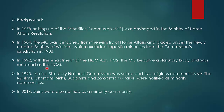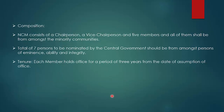In 1993, the first statutory National Commission for Minorities was set up and five religious communities — Muslim, Christians, Sikhs, Buddhist and Zoroastrians (Parsis) — were notified as minority communities. Now we have six minorities in India: Christians, Sikhs, Buddhists, Muslims, Zoroastrians, and in 2014, Jains were also notified as a minority community. After 2014, we now have six minorities.